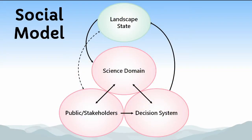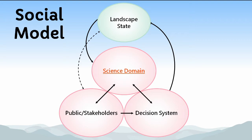A more complete model of conservation is shown here. The biocentric model we discussed earlier is still here; I've labeled it the science domain to reflect the fact that it's mostly conservation professionals that are active in this area. The activities are the same — they include studying the landscape to determine what the natural state is and how it's changed over time, and devising solutions to conservation problems. But we can see from these arrows that the flow of information has somewhat changed. Information about the state of the landscape still primarily flows into the science domain, but conservation professionals are generally not the ones making decisions about how we interact with the landscape. Instead, information about conservation problems and solutions flows down to the public, to stakeholders, and to decision-makers.